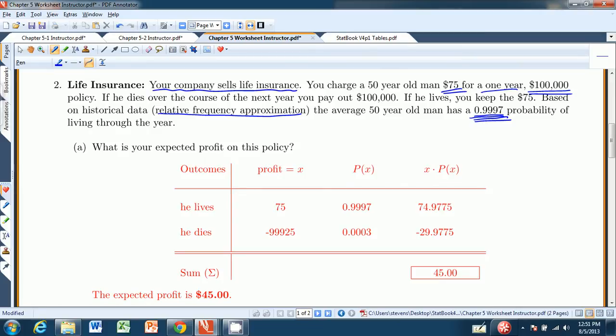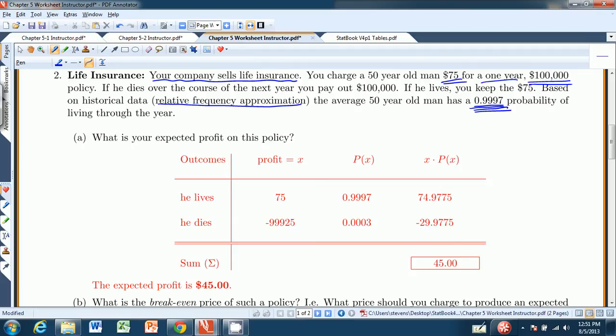And on the other hand, if that person lives through the course of the next year, you get to keep the 75, and that's the end of it. And based on historical data, relative frequency approximation, the average 50-year-old man has a .9997 probability of surviving through the year. So when we make our probability distribution table, our expected value table, we have two outcomes: the person who sold it to lives, or the person who sold it to dies. And the profit, if he lives, is 75. You get to keep the 75 that he gave you.